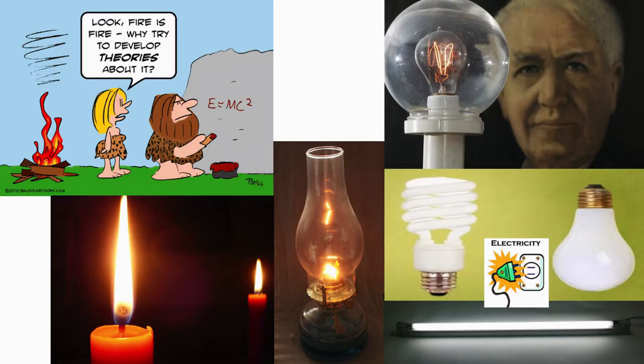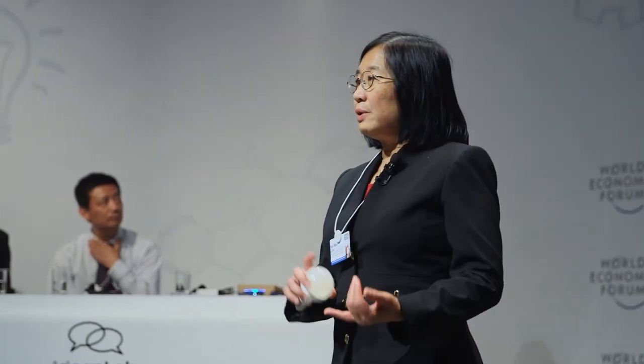At the beginning, light sources were fire — fire gives heat and light so activities can continue after the Sun goes down. Then we had candles, then oil lamps, and we started burning midnight oil. When electricity came along, we got the electric light bulb and fluorescent lights.